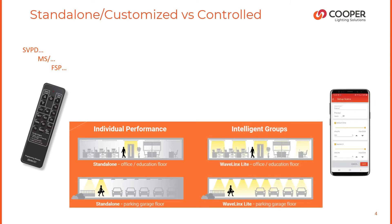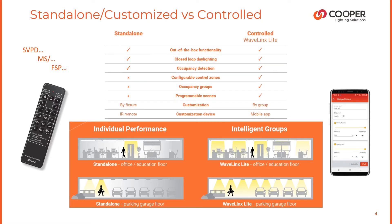Wavelinks Light, on the other hand, provides that level of performance, but rather than customizing device by device with an IR remote, Wavelinks Light uses a mobile application from your smart device to form a Bluetooth mesh network. This network allows not only for configuration, but formation of areas, zones, occupancy sets, and daylighting. So Wavelinks Light blends the simplicity of a standalone system with the usability of a connected system and can be easily configured with an exceptional user experience.